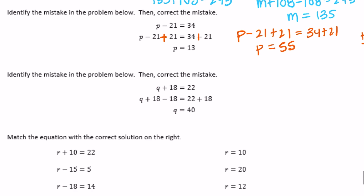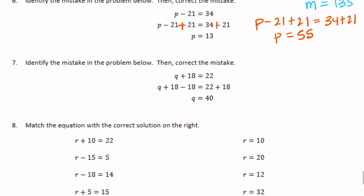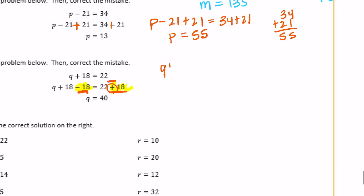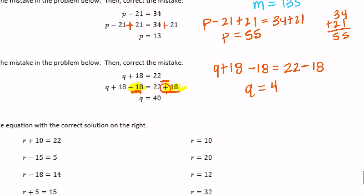Number 7 — identify the mistake again, then correct the mistake. So Q plus 18 equals 22. They subtracted 18 on the left — that's good — but on the right side instead of doing minus 18, they did plus 18. These need to match because we must do the same thing on both sides for them to stay equal. So it should be Q plus 18 minus 18 equals 22 minus 18. So Q is equal to 4.